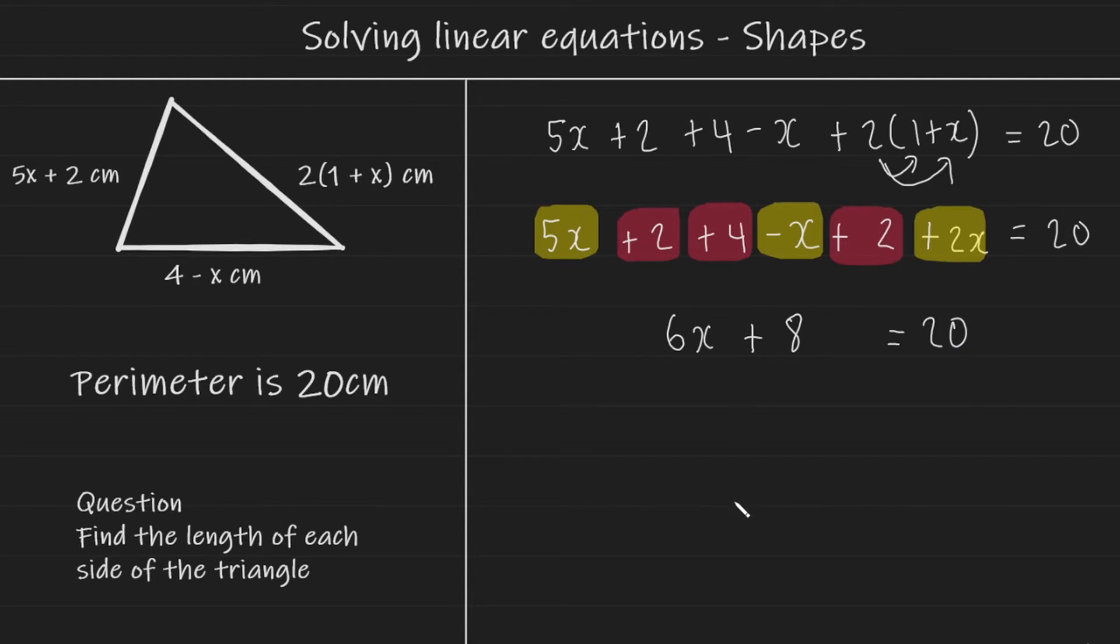Okay, so now this becomes a two-step linear equation that we can solve. So I'm going to isolate the x, and I'm going to eliminate the 8 first. So that's going to be minus 8, minus 8. This leaves us with 6x equals 12.